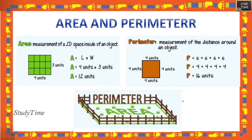Area and perimeter: whatever is shown inside a shape is the area; the outline is called the perimeter. For a 2D shape with 4 units and 3 units given, length × width = 4 × 3 = 12 square units. The measurement unit is not specified here, so we simply write 'units'. For perimeter, add all sides or write 4 × 4 = 16 units.